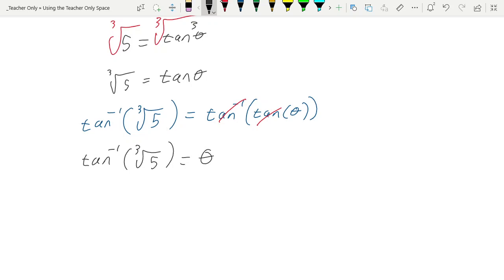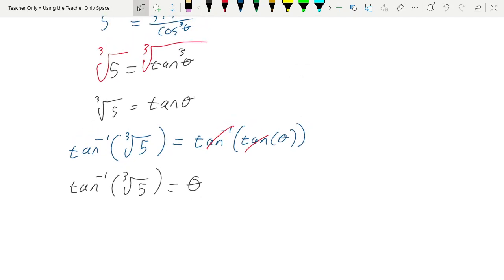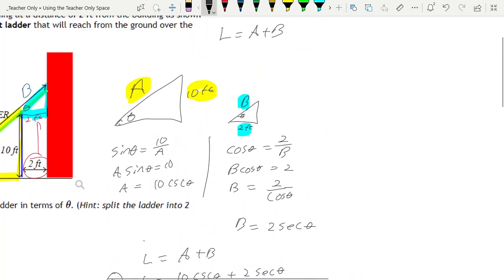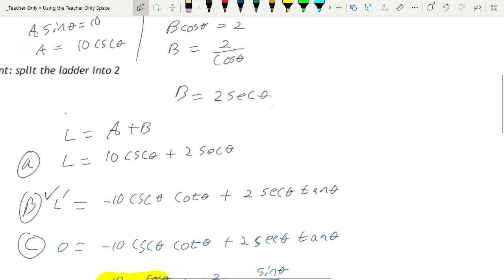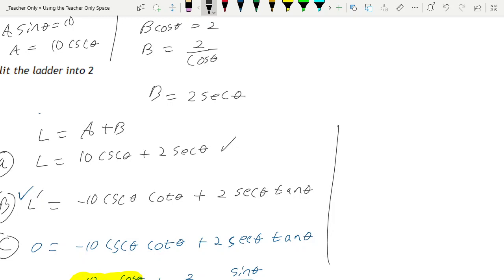All right, great, we're done. No, we're not. This is the most common mistake that happens. Answer the question that's being asked. We found the theta that would minimize the length of the ladder. But they didn't ask us to find that. They asked us to find the actual length of the ladder.